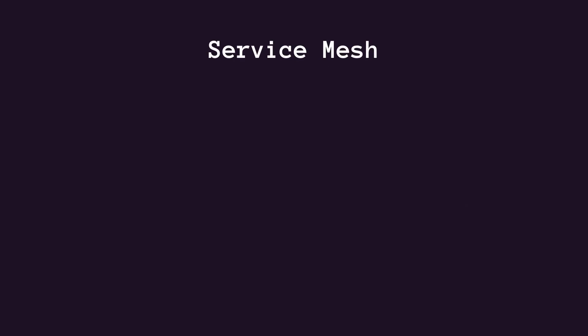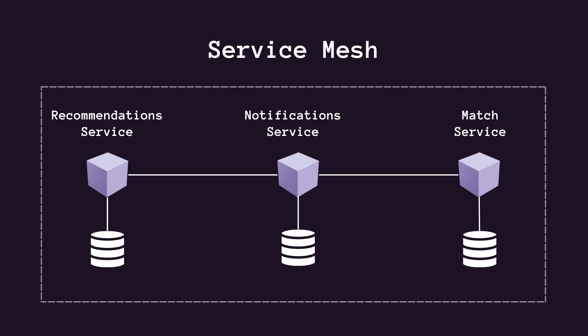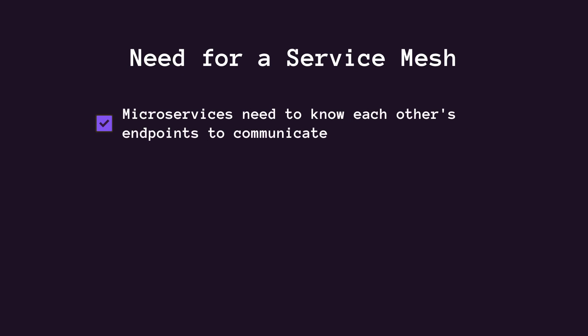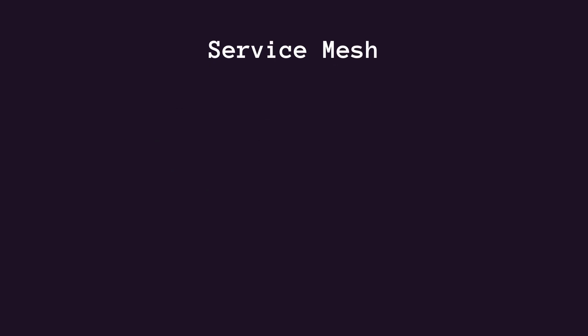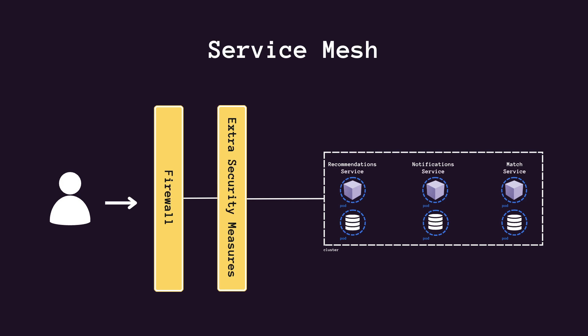A service mesh is a way to control how different parts of an application share data with each other. Let's imagine we have a Kubernetes cluster with pods that hold our microservices. The need for a service mesh comes from the fact that microservices can only communicate with each other whenever they know each other's endpoints. All of that has to be configured for every microservice, and that adds overhead. Also, a Kubernetes cluster can have a firewall and other security measures sitting in front of it, but the communication between the services is not secure at all — there are simply no rules.